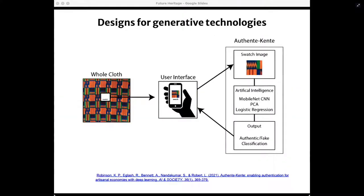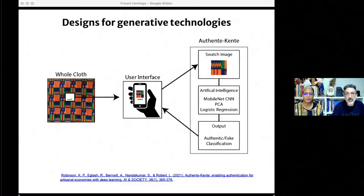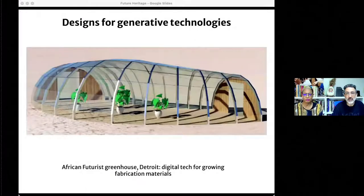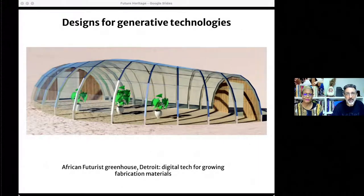Each time the generative cycle completes a loop, new opportunities for less exploitative forms of labor, production, and consumption emerge. For example, with our Ghanaian collaborators, we recently developed a machine learning app to prevent tourists from accidentally buying factory-made fakes instead of authentic weaving. We hope to extend that to a link that will allow the weavers to show up in your home or classroom and have a conversation with you — really changing both the consumption and production patterns.